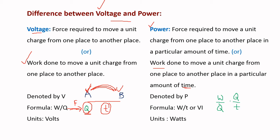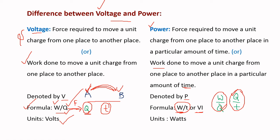Voltage is denoted by V and power is denoted by P. The formula for voltage is W/Q, where W is work done and Q is charge. The formula for power is W/T, or equivalently V × I — derived by multiplying and dividing W/T by Q, where W/Q is voltage and Q/T is current. Units for voltage are volts and for power are watts.